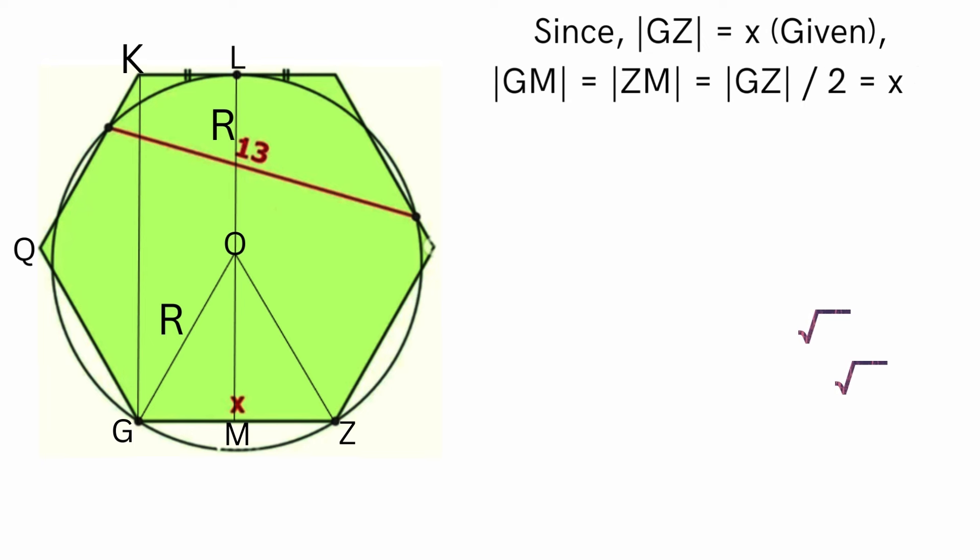We can find GK using cosine rule, which gives us GK to be equal to the product of X and square root of 3.